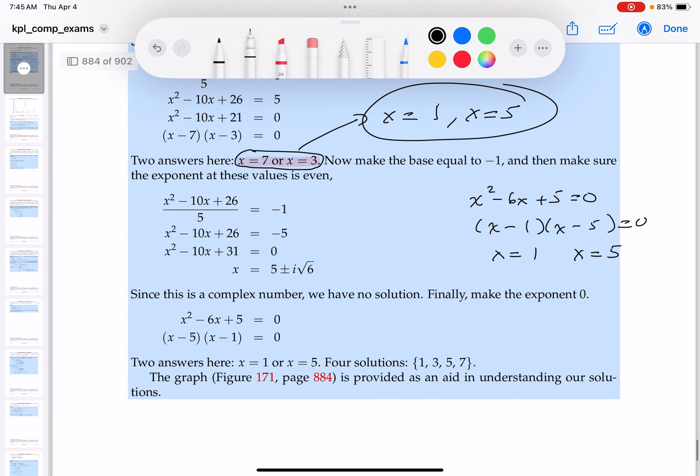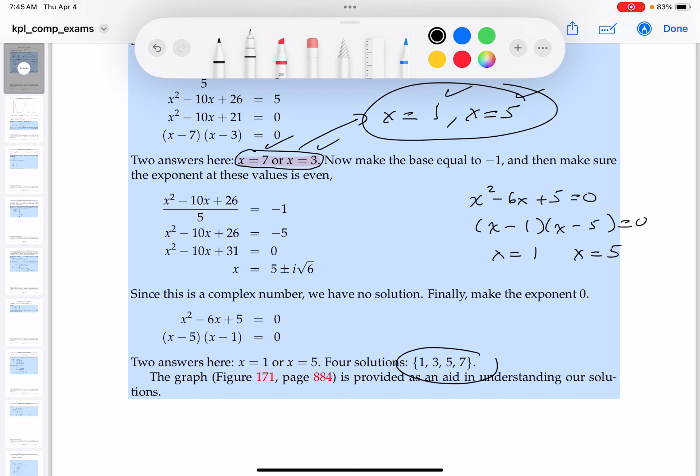So we have four separate answers. What are the answers going to be? Well, we're going to get 1, 3, 5, and 7. 1, 3, 5, 7. It's not a bad problem.